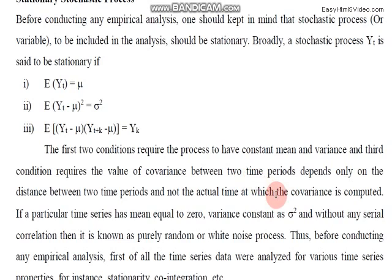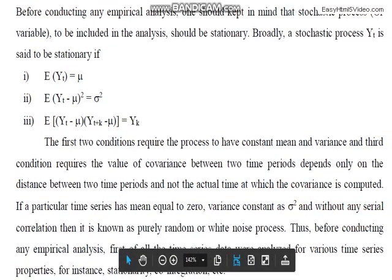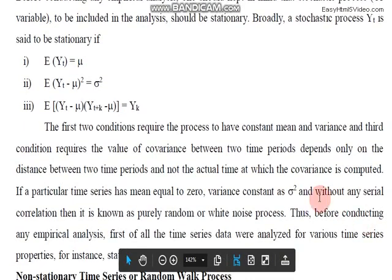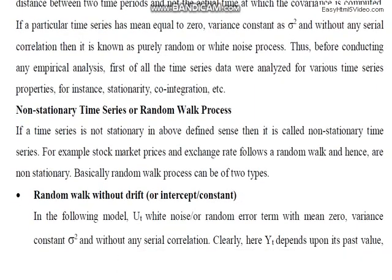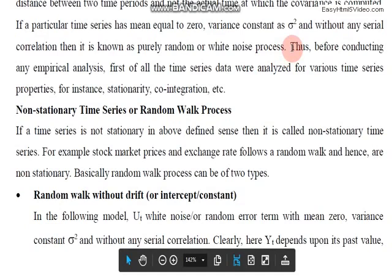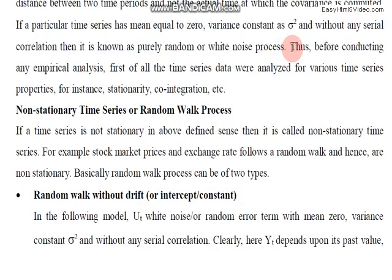You are not considering the specific years but only the time lag — one year — so the covariance should be constant whether computed between 2014 and 2015, 2013 and 2014, or 2012 and 2013. If your time series satisfies all three conditions — constant mean, constant variance, and constant covariance dependent only on time lag — then it is known as a stationary stochastic process.